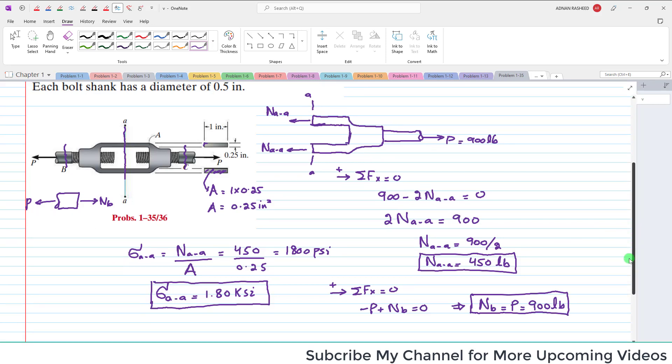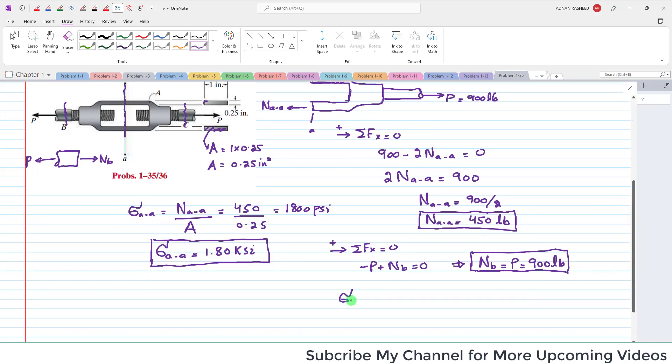Now you have this force, and you can find the stress. Sigma B is equal to N_B, which is normal force divided by area of this bolt shank. I will put the value 900 pounds.